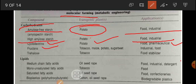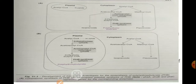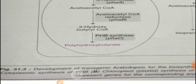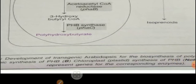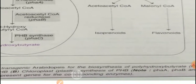Proteins can be synthesized in tobacco, maize, potato, and sugar beet and are also used in industrial and food areas. Similarly, lipids follow the same conditions. Going through this table of applications of molecules — carbohydrates and lipids — you will be able to understand. This is the diagrammatic representation showing the synthesis of bioplastic PHB, both cytoplasmic and chloroplast/plastid synthesis.